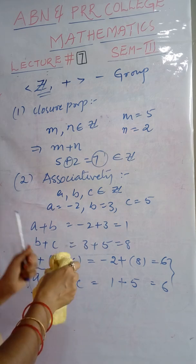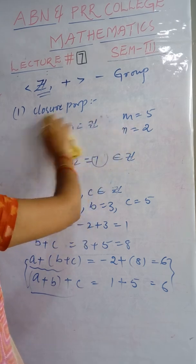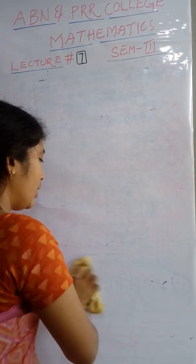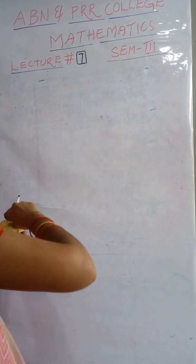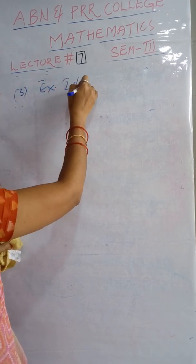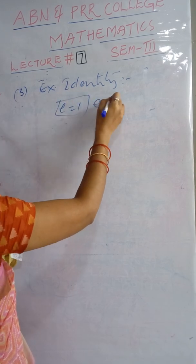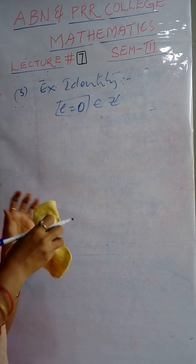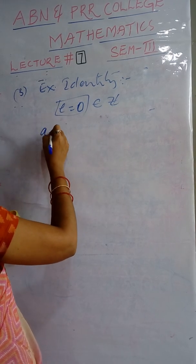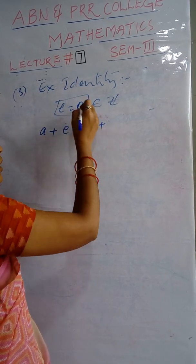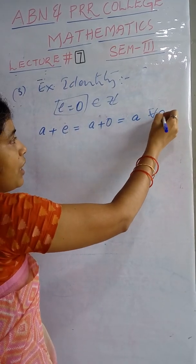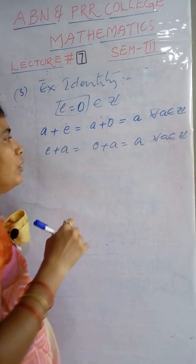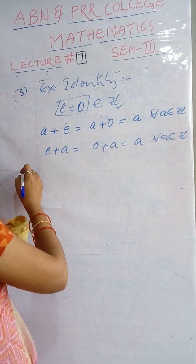The third property is existence of identity. The additive identity is 0. Zero is an integer, so the identity element exists in Z. For every a in Z, a + 0 = a and 0 + a = a. So the additive identity element 0 exists in the set of integers.